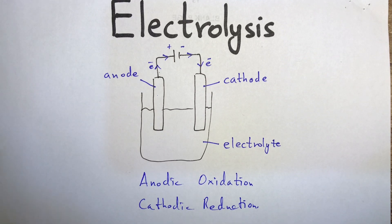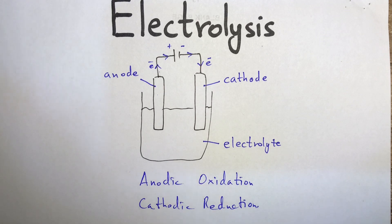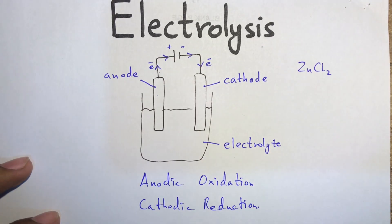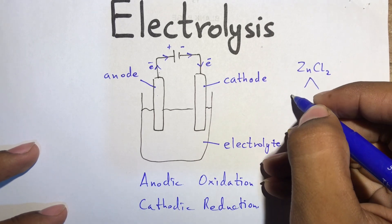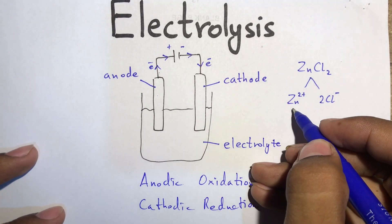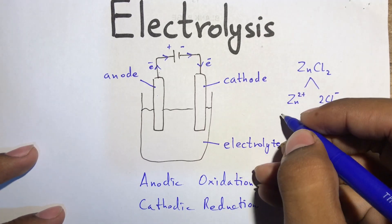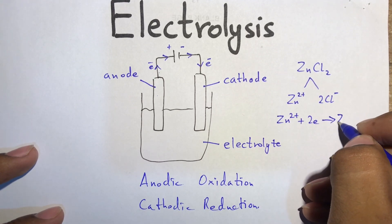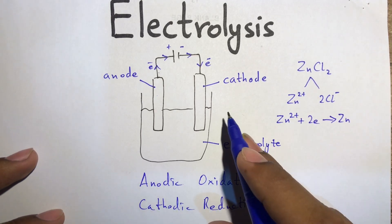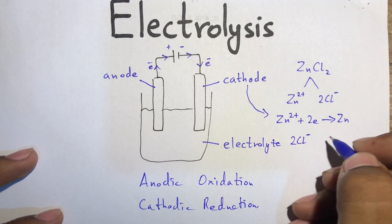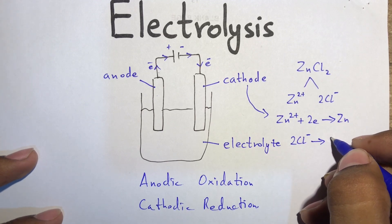At the anode, it's negative ions that move towards the anode and they get oxidized. Electrolysis is a redox reaction. For example, in zinc chloride, the Zn²⁺ is the positive ion and two Cl⁻ are the negative ions. Zinc ions move towards the cathode and get reduced — a gain of electrons. At the anode, chloride ions lose electrons and get oxidized to form chlorine.